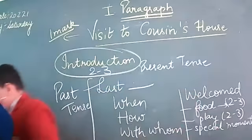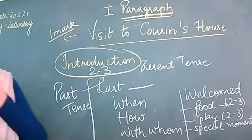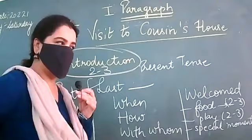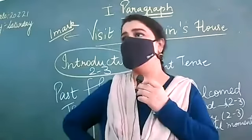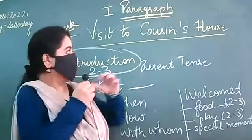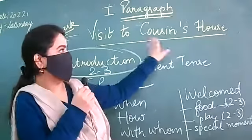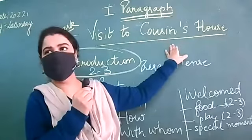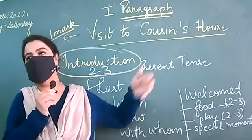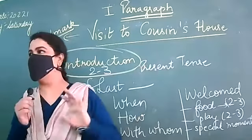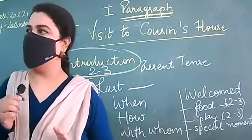You can add something like going to the amusement park but not more than one or two lines. Your focus first should be 'visit to cousin's house,' but you can mention the amusement park briefly in one or two lines. Well done!